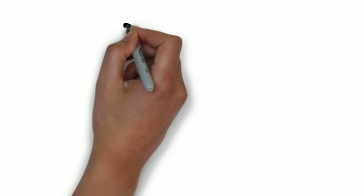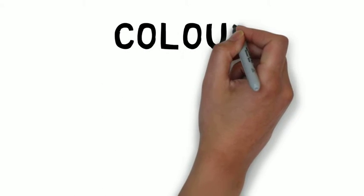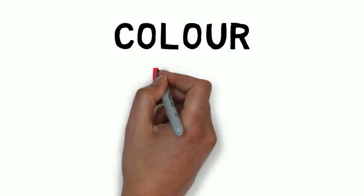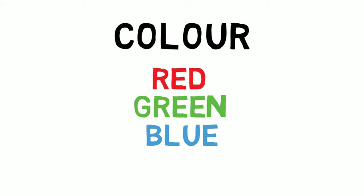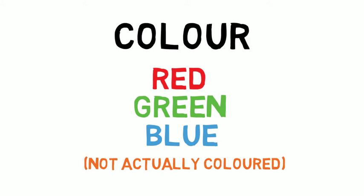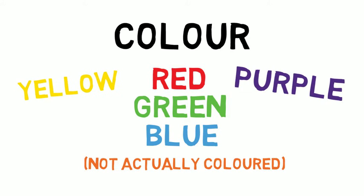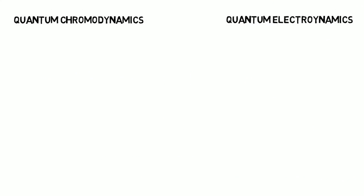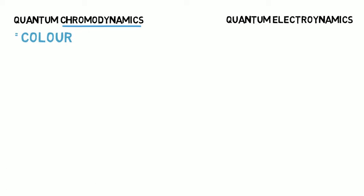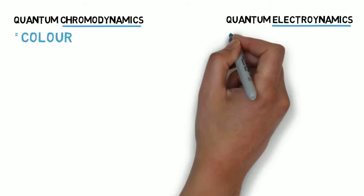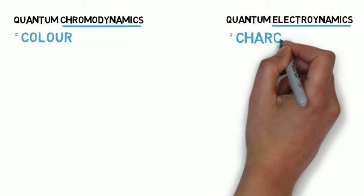In addition to all of this, the quarks and the gluon carry a special property called colour. There are three possible colours — red, green and blue — each with its own anti-colour. However, the quarks and the gluon themselves aren't actually coloured. We could equally well have chosen purple or yellow or any other label, A, B or C. The name itself isn't what's important. What's important is that colour is to quantum chromodynamics, the theory of how the quarks interact, as charge is to electromagnetic interactions, called quantum electrodynamics in the Standard Model.